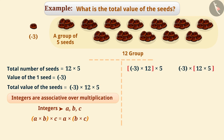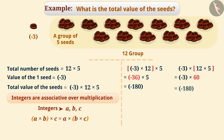If we make a group of minus 3 and 12 and find the product, we get the result minus 180. If we make a group of 12 and 5 and find the product, then also we will get the same answer. Can you tell me why did this happen?